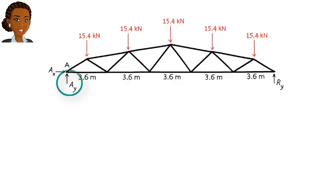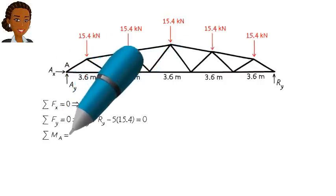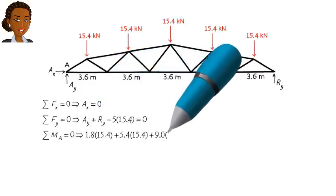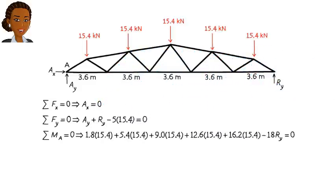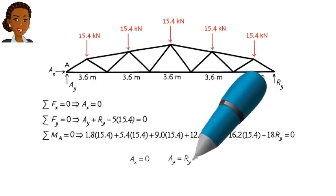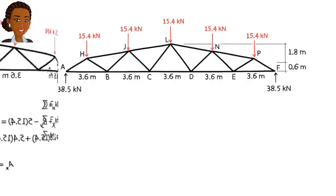There are three support reactions. Applying the equilibrium equations to the entire system, we get... Solving these equations for the unknown reactions, we get... Now we are in a position to analyze the truss joint by joint.